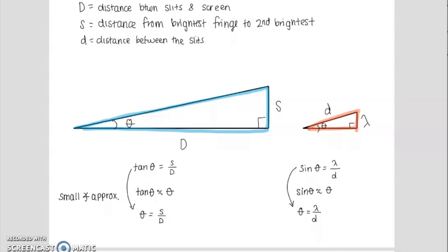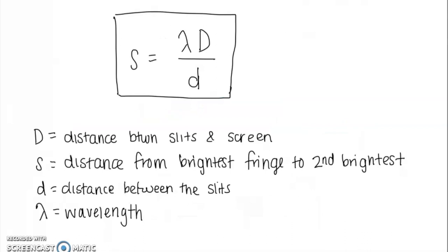So I'm going to take these two equations, since they are both theta equals, theta equals. I'll rearrange this just a little bit more, bringing that big D to the other side. And I do that so that this equation will look exactly like what is in your data booklet. So in summary, we have just derived this equation: S equals lambda capital D over little d. Capital D stands for the distance from the slits to the screen. S stands for the distance from the brightest fringe to the second brightest fringe. Little d stands for the distance between the slits. And lambda, of course, stands for wavelength.